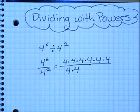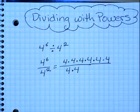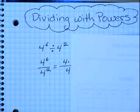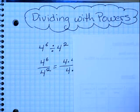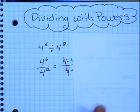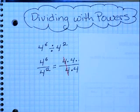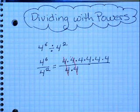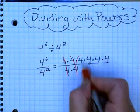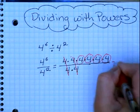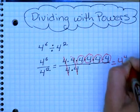If this were just a simple division problem, you might notice that 4 divided by 4 is 1 — they cancel each other out. Moving over, 4 divided by 4 is also 1. And all we have left is 1, 2, 3, 4 fours. So therefore our answer is 4 to the 4th power.